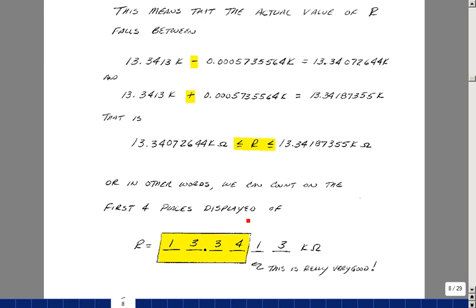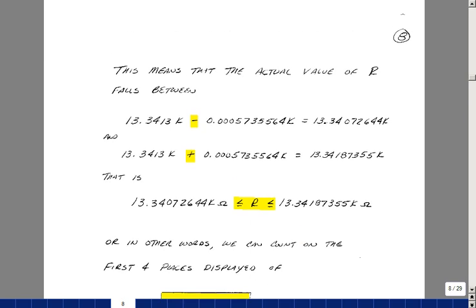And then the fifth place is very closely the same but we could say that at least those four places are representative of our actual value. Let me back up here a little bit to the first reading here.